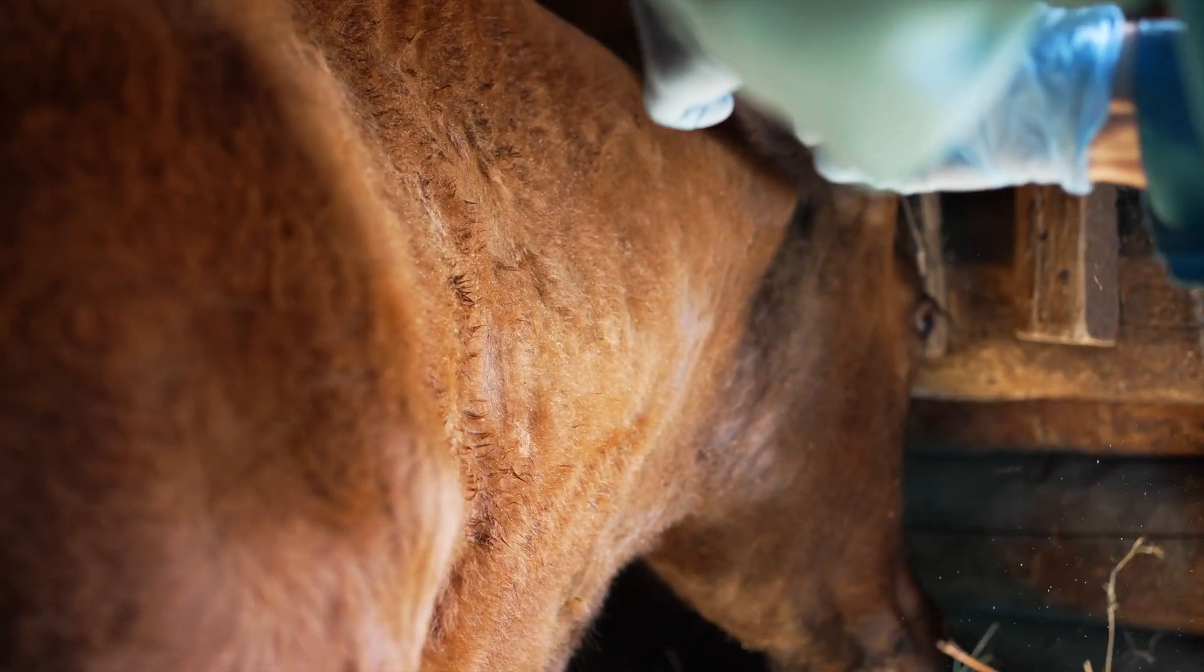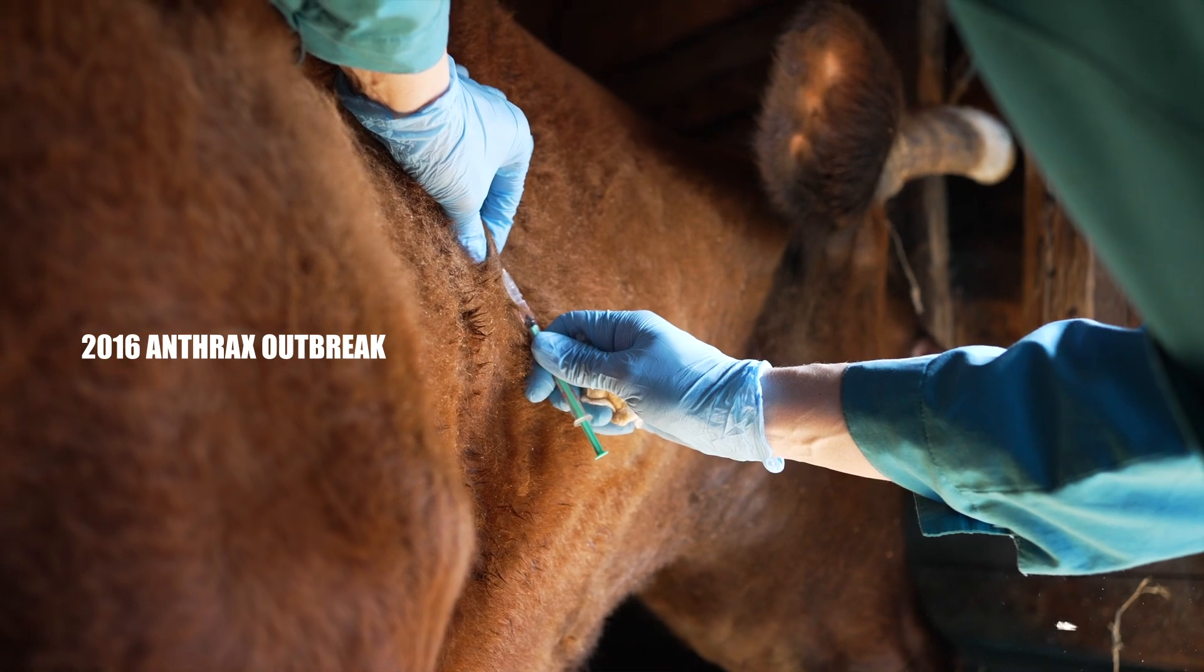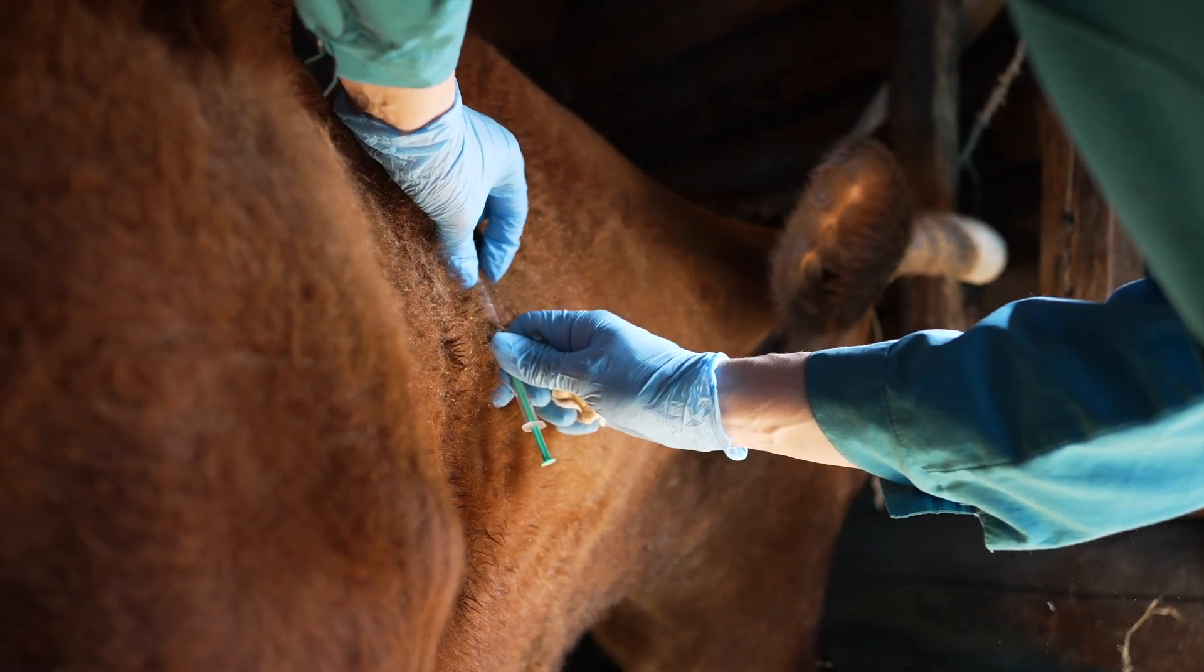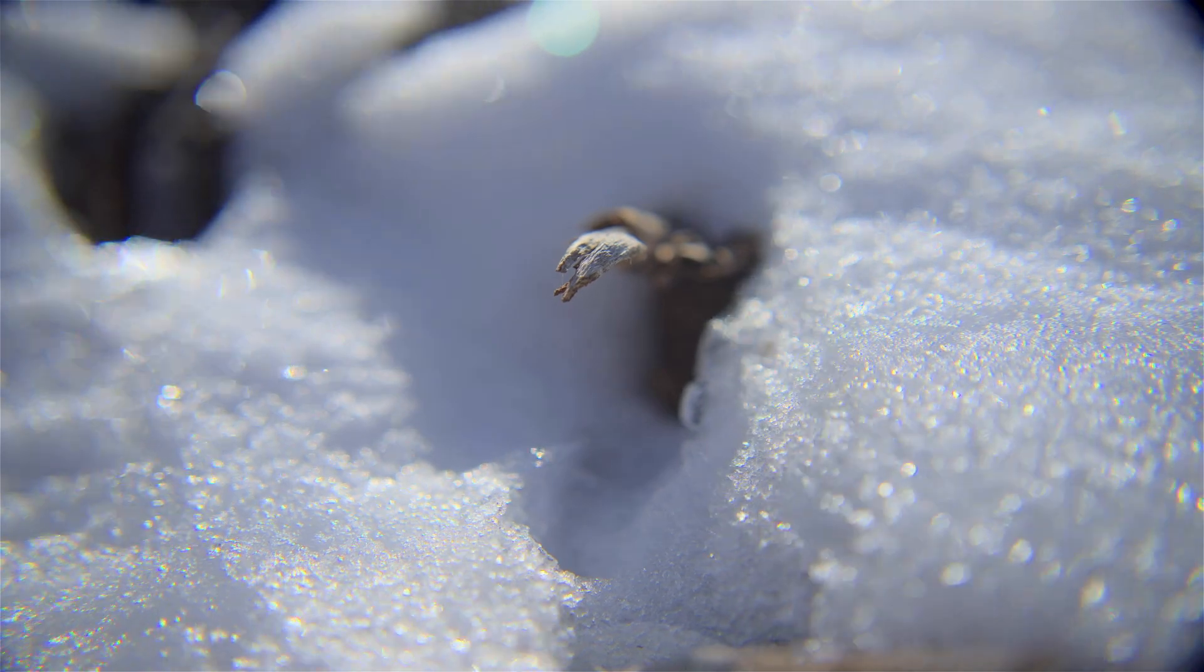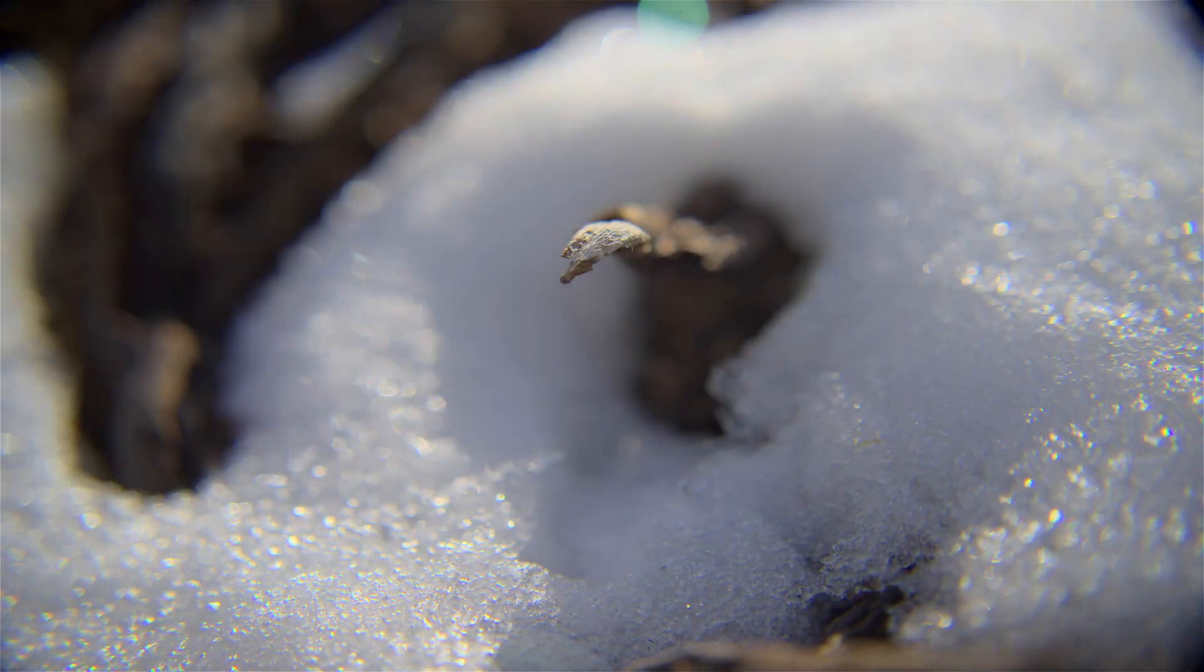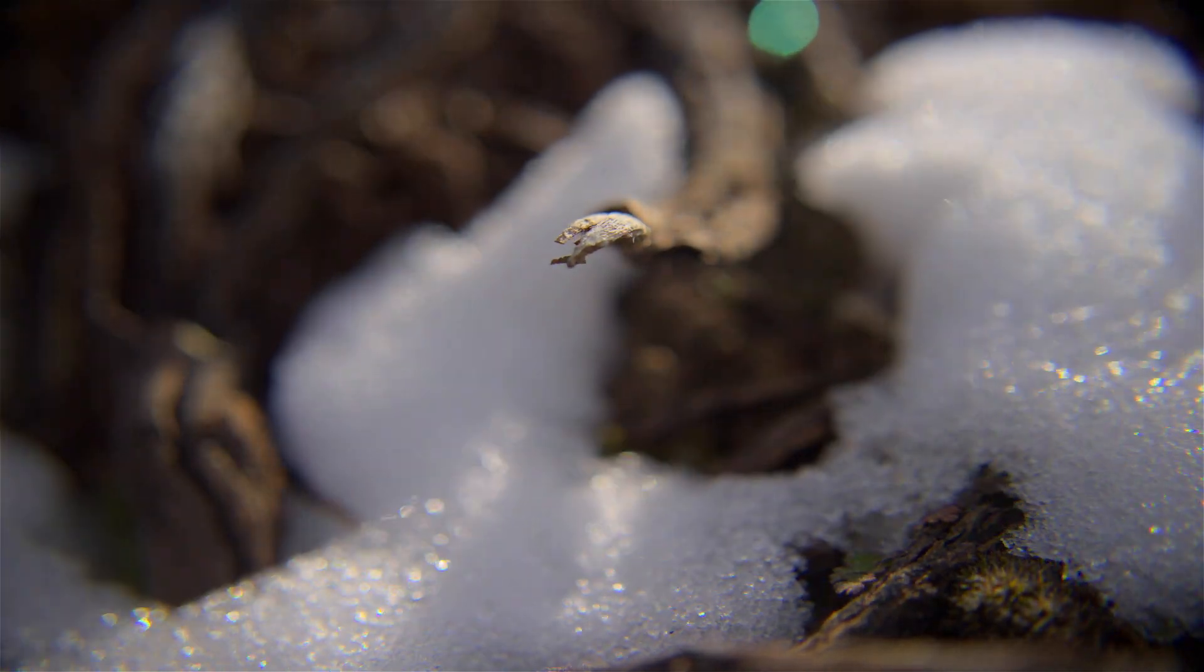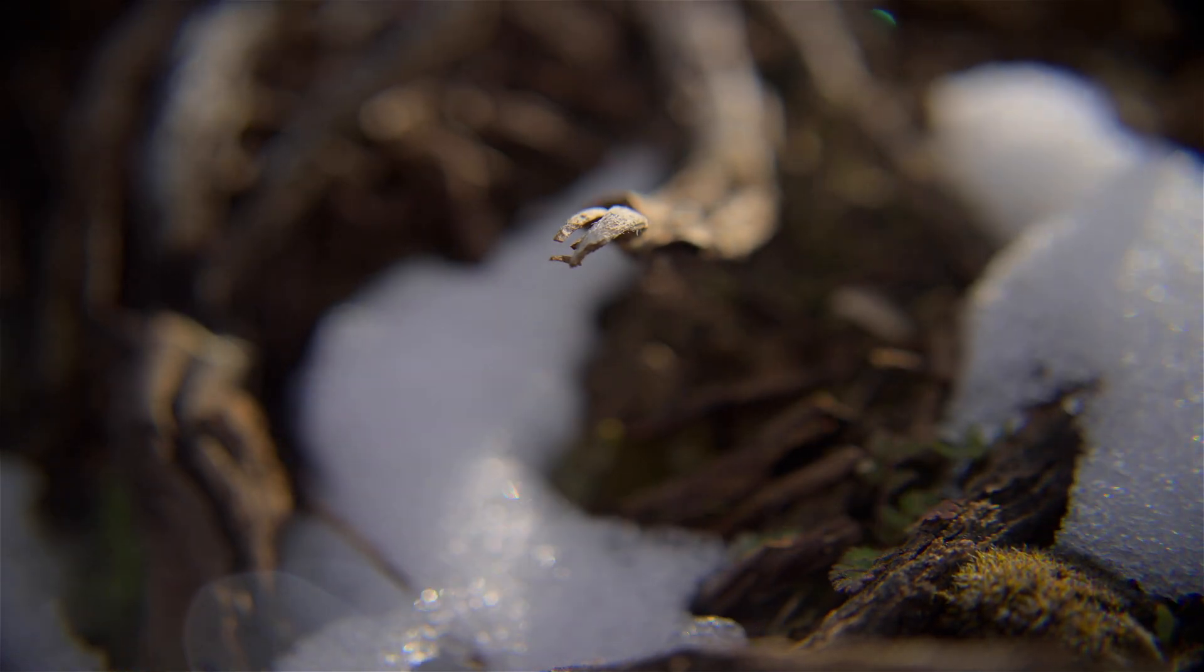An even more alarming episode occurred during the 2016 anthrax outbreak that struck dozens of people and thousands of reindeer in Siberia. It was caused by the rapid and profound thawing of permafrost during exceptionally warm summers, allowing old Bacillus anthracis spores to reemerge from ancient human burial sites or animal carcasses.